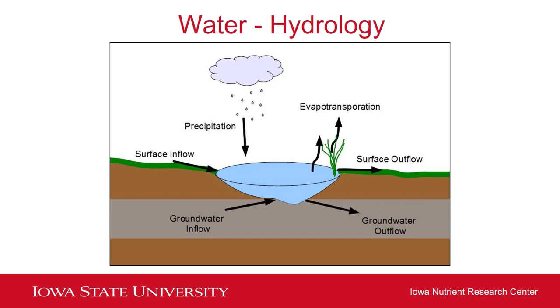There are also a number of different ways that wetlands can lose water: through evapotranspiration, through surface outflow, as well as through groundwater outflow.